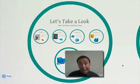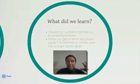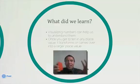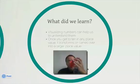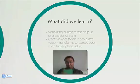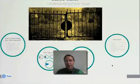So let's talk about what we learned. We learned that visualizing numbers and their place values is really important, and that once you get 10 in any one place value, they transform. If you had 10 of the ones, they transform into one ten. If you had 10 tens, they transform into one hundred. If you had 10 hundreds, they transform into one thousand. If you had 10 thousands, they would transform into something like a 10,000 block. So once you get to 10 in any place value, it carries over to the next largest place value.